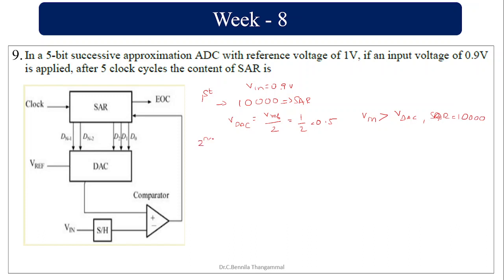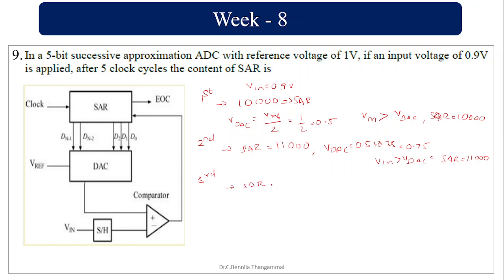For the second cycle, SAR = 1, 1, 0, 0, 0. DAC output = 0.5 + 0.25 = 0.75 volts. VIN (0.9) is still greater than V_DAC (0.75), so SAR remains 1, 1, 0, 0, 0. For the third cycle, SAR = 1, 1, 1, 0, 0. DAC output = 0.5 + 0.25 + 0.125 = 0.875 volts. VIN (0.9) is still greater, so SAR remains unchanged at 1, 1, 1, 0, 0.